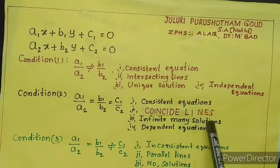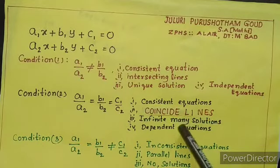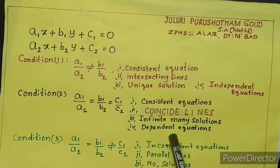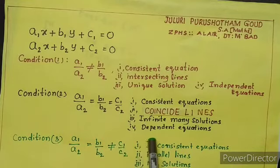But coincide lines. Coincide, when graphical representation is coincide, one line coincide on another line means we get infinite many solutions. These are called, these equations are called dependent equations.